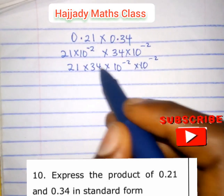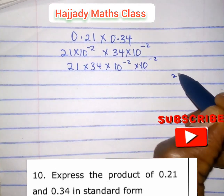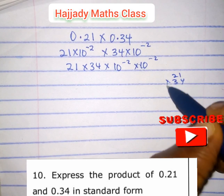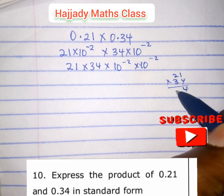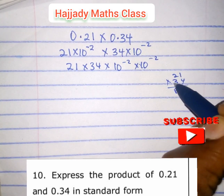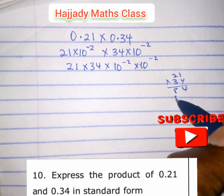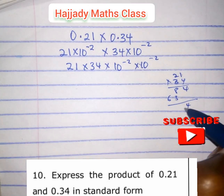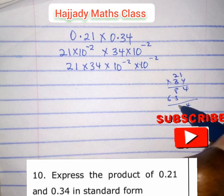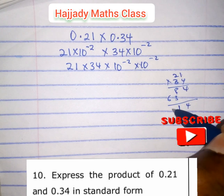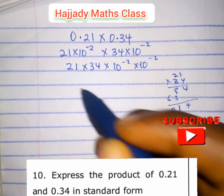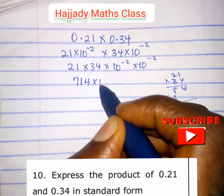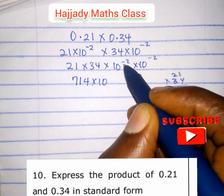21 times 34 — you can do that roughly here. 21 times 34: 4 times 1 is 4, 4 times 2 is 8, 3 times 1 is 3, 3 times 2 is 6. We have 4, then 8 plus 3 gives 11. So we have 714.